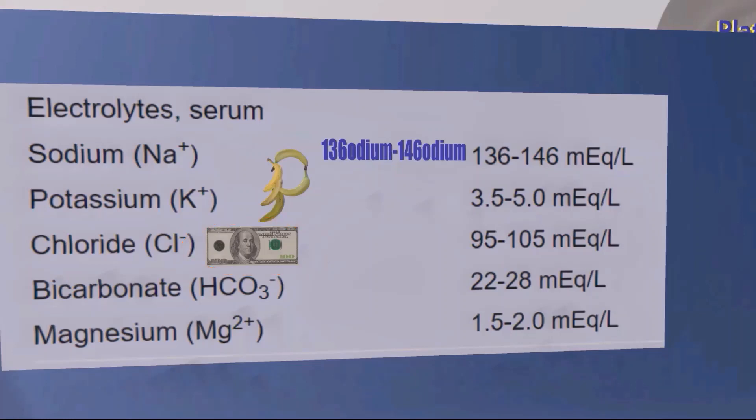Bicarb should be between 22 to 28. Perhaps we can imagine a bicycle for bike, bicarb bike, and bicycles go about 22 to 28 miles per hour. Magnesium is between 1.5 to 2. Perhaps you can look at this 2+ over here by magnesium to remind you of 2, that it should be about 1.5 to 2.